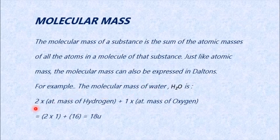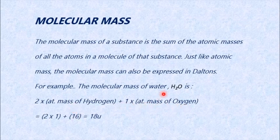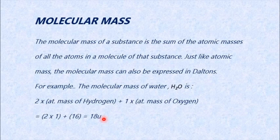To calculate the molecular mass of water: two into the atomic mass of hydrogen (which is 1) gives 2, plus one into the atomic mass of oxygen (which is 16) gives 16. So 2 + 16 = 18u, that is 18 daltons. Now take out your rough book and try to calculate the molecular mass of HCl, H₂SO₄, NaCl, and so on.